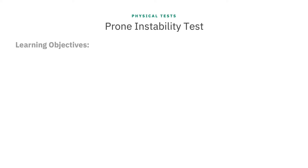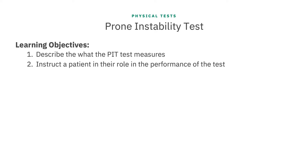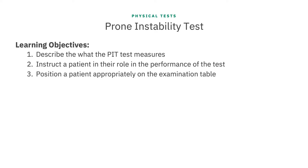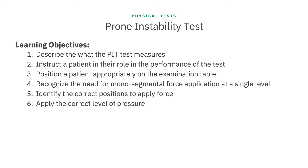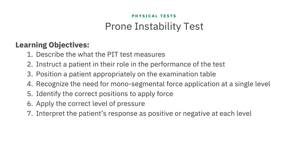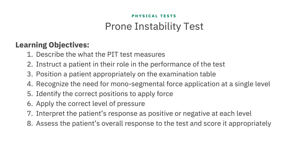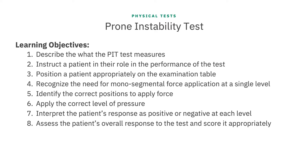By the end of this lesson, you will be able to describe what the PIT test measures, instruct a patient in their role in the performance of the test, position a patient appropriately on the examination table, recognize the need for mono-segmental force application at a single level, identify the correct positions to apply force, apply the correct level of pressure, interpret the patient's response as positive or negative at each level, and assess the patient's overall response to the test and score it appropriately.